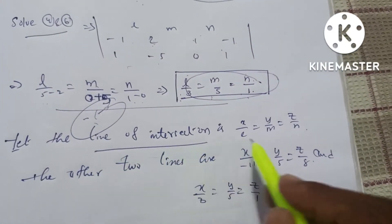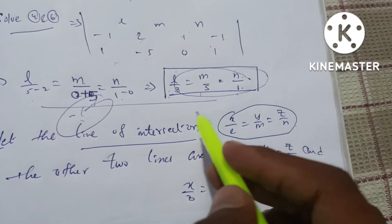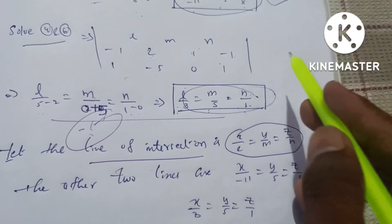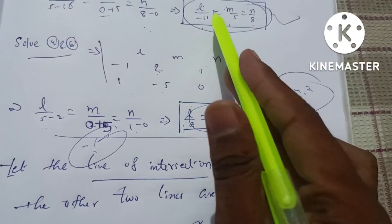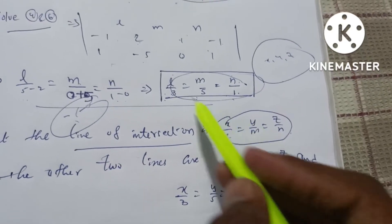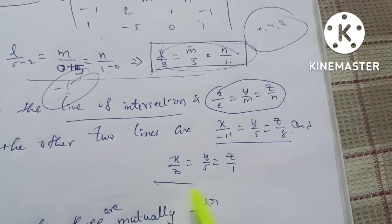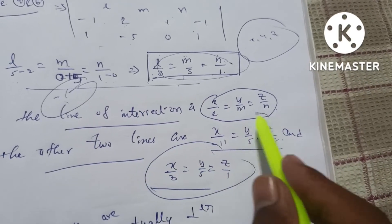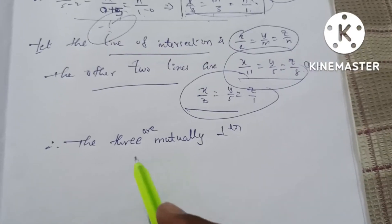Therefore, the line of intersection gives us the other two generator lines. Line 1: x/(−11) = y/5 = z/8. Line 2: x/3 = y/5 = z/1. Therefore, the three generators are mutually perpendicular.